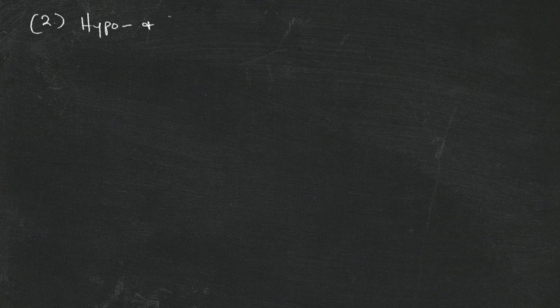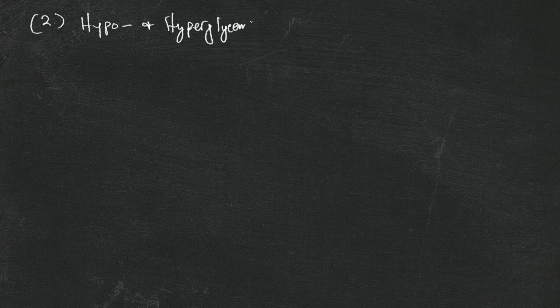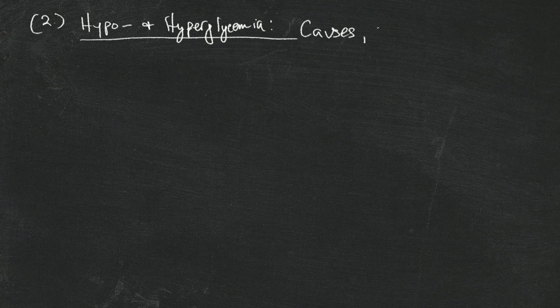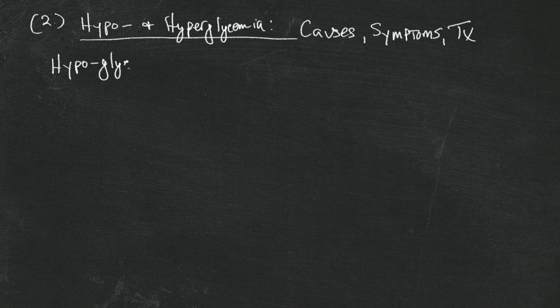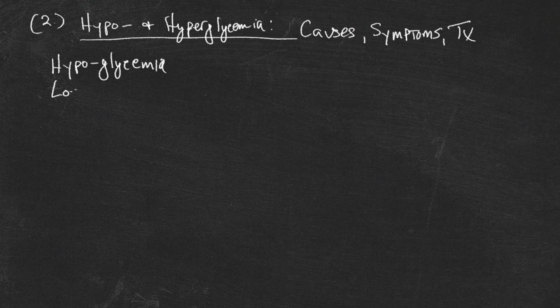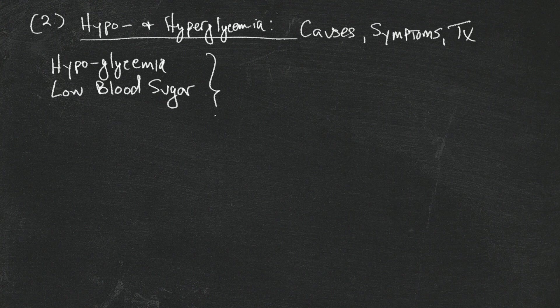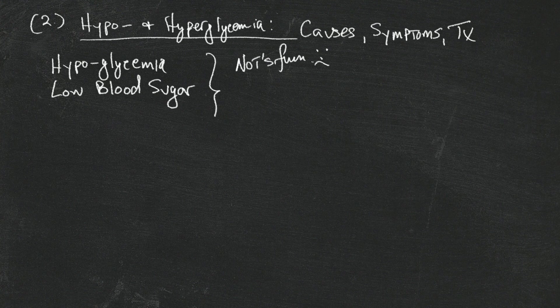Okay, now topic two: hypo and hyperglycemia. It's important to go over this stuff as part of the overall understanding of what's involved in managing diabetes on a daily basis. So hypoglycemia is just a fancy name for saying low blood sugar. You can call it whatever you want, but a lot of times it's not fun.